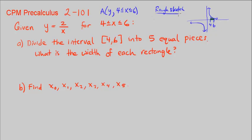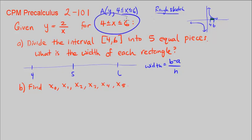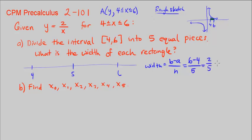Part A says divide the interval into 5 equal pieces. What is the width of each of these pieces or each rectangle? We know the width can be found by the formula B minus A over N, where 6 is our ending (B), 4 is our start (A), and N is the number of pieces, 5. So 6 minus 4 over 5 equals 2 fifths, which is 0.4. The width of each rectangle is 0.4.